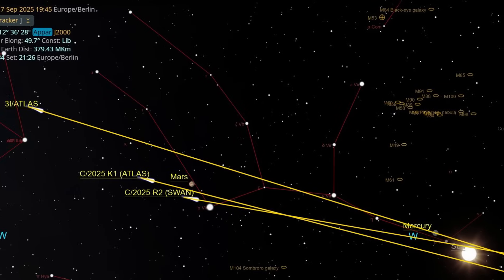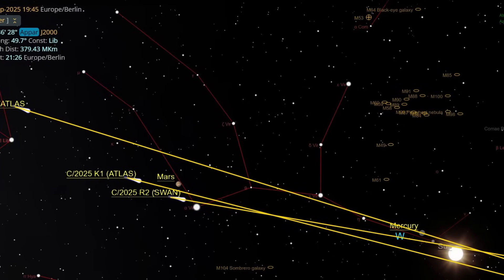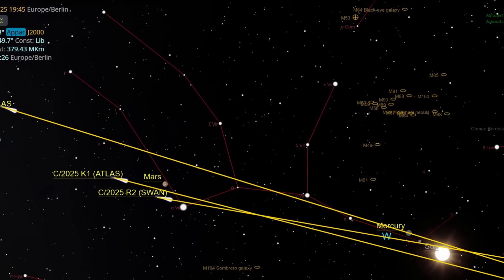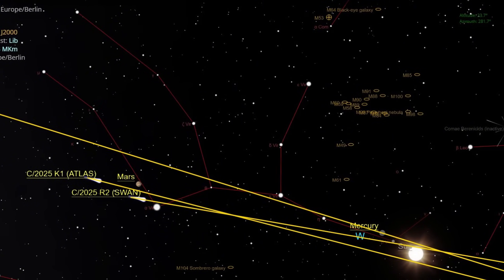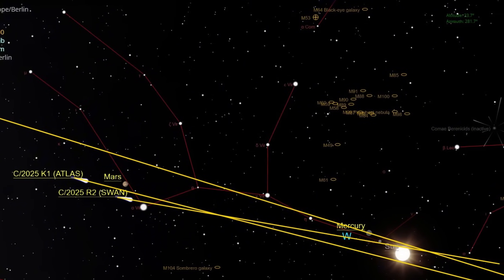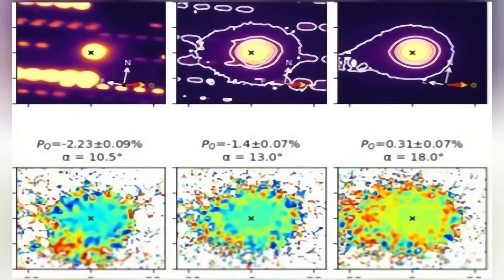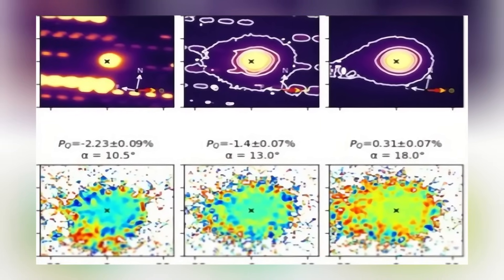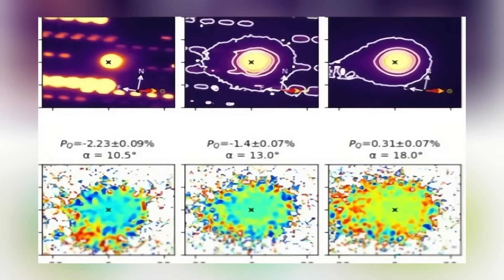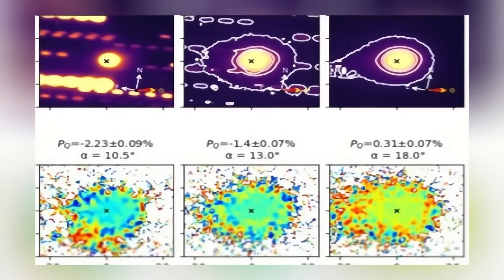Yet 3i Atlas does not conform to this pattern. Its coma seems to expand toward the sun itself as though defying the forces that govern ordinary cometary behavior. Astronomers call such a feature an anti-tail. But its persistence and orientation in this case remain puzzling. It may be a trick of geometry, or it may reflect processes unique to interstellar materials long exposed to cosmic radiation.